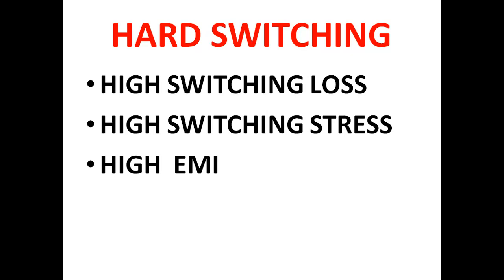Hard switching means you don't see whether voltage is zero or current is zero. You randomly give the pulse. So more switching loss and more switching stress. Voltage stress means dv by dt. Current stress means di by dt. Because you are suddenly turning on or suddenly turning off, the stress will be higher. Such waveform produces more electromagnetic interference.